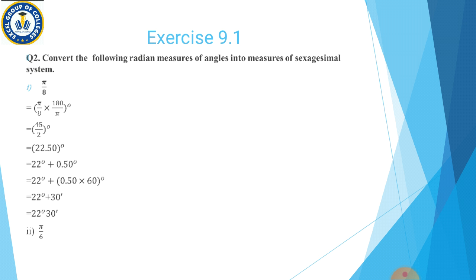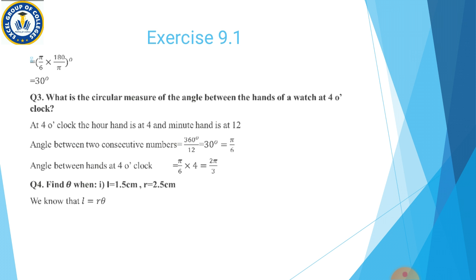Moving on towards second part: π/6. Yeh question radian mein hai, ise degree mein convert karne ke liye 180/π se multiply karenge. Pi cancel hoga. 180/6 = 30 degrees. Is question mein answer exact aaya — 30 degrees. Koi bhi value points mein nahi aayi, to ise aap mazeed solve nahi karenge. Yeh tha question number 2 ka part 2.